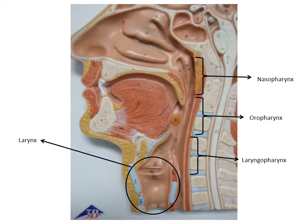The subdivisions: remember this entire tube is called the pharynx. It is subdivided into the portion of the pharynx that's behind the nasal cavities — the nasopharynx. The portion that's behind the oral cavities is the oropharynx.